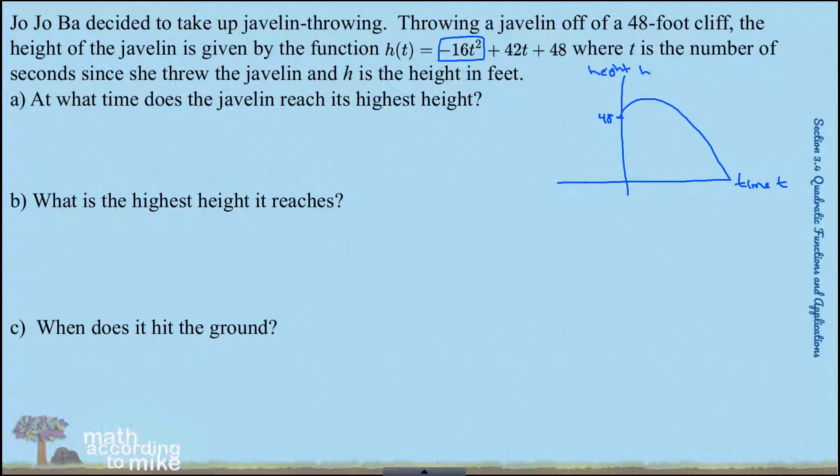So we're asking for at what time is the javelin the highest off the ground. Since we're looking for the x-coordinate of the vertex, then you need to use the formula negative b over 2a.